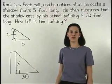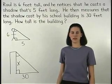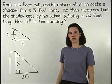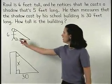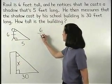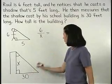And remember that if two triangles are similar, then the lengths of the corresponding sides are in proportion. So we can set up the proportion 6 is to x as 5 is to 30.